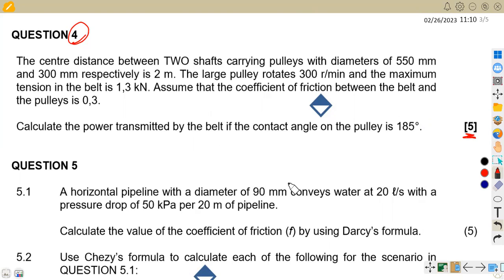We were given that the center distance between two shafts carrying pulleys with diameters 550 millimeters and 300 millimeters respectively is two meters. The larger pulley rotates at 300 revs per minute and the maximum tension in the belt, which is our T1, is 1.3 kilonewton. Assume that the coefficient of friction between the belt and the pulley is 0.3. Calculate the power transmitted by the belt if the contact angle of the pulley is 185 degrees.